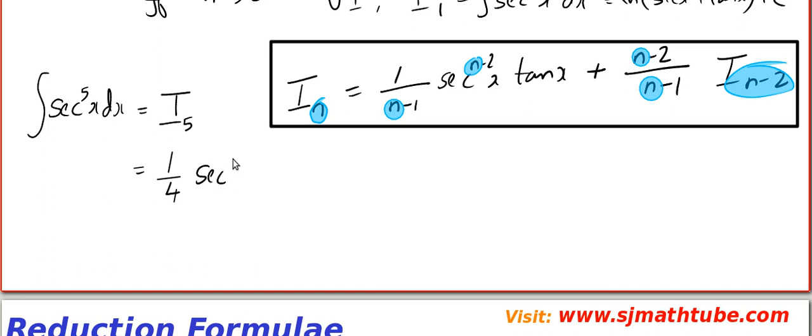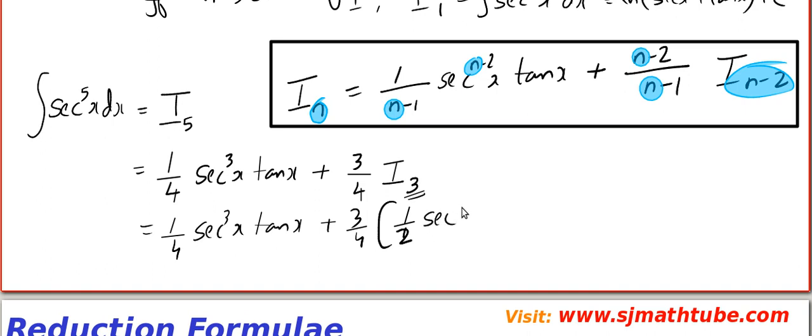Now look at this. We have I5. So you have to plug in 5 over here. So that is 1 by 4, sec to the power 5 minus, that is 3x tan x plus 5 minus 2 is 3 by 4, I3. Now to find I3, we do the same trick. 3 by 4. Now what I do is, I will plug in 3. So I get 1 by 2 sec to the power x tan x, because 3 minus 2 is 1 plus 3 minus 2 is 1 plus 3 minus 2, 1 by 2, I1. Yeah, we have the ultimate integral.